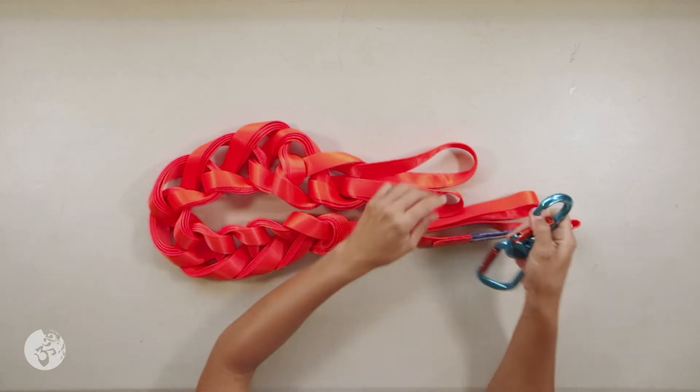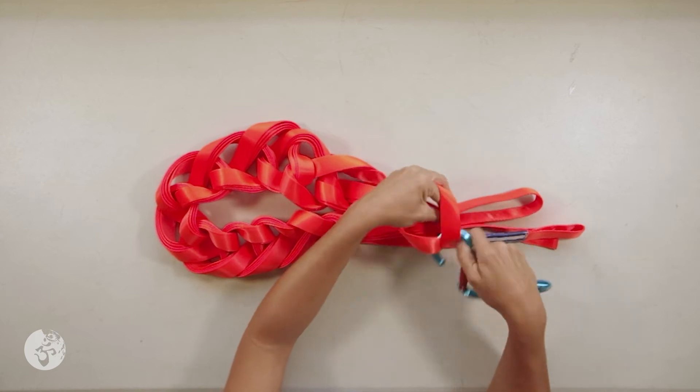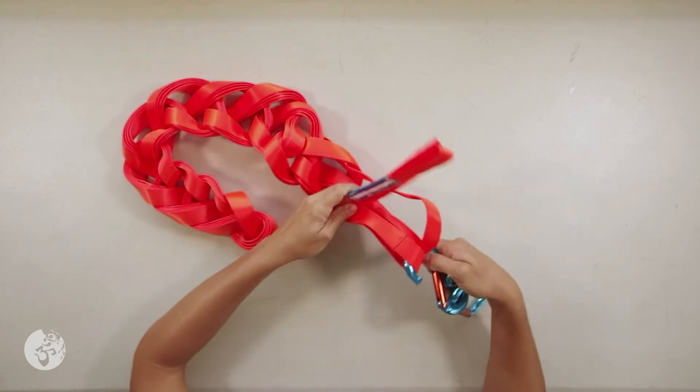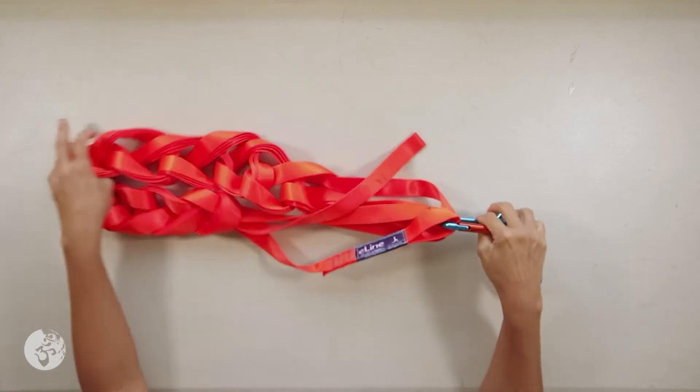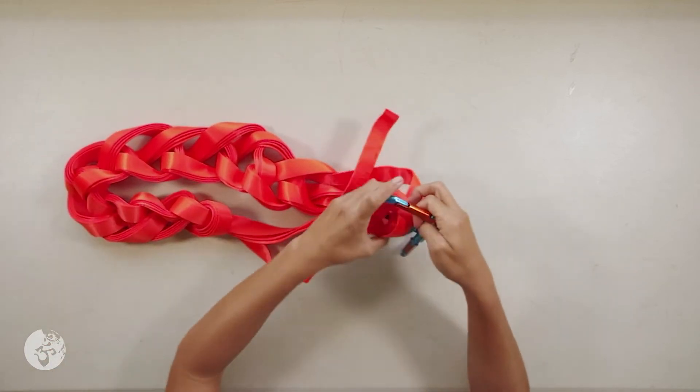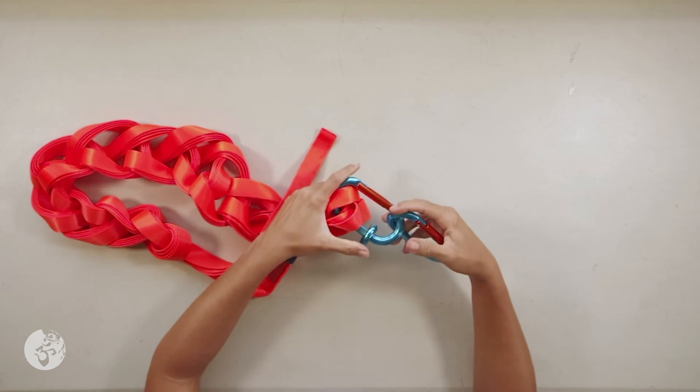I will take my carabiners and I will pass them through all the loop sides of the line. And this is how I will travel with it. I have a carabiner, two carabiners.